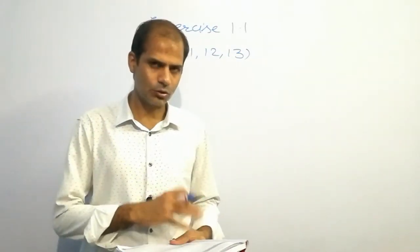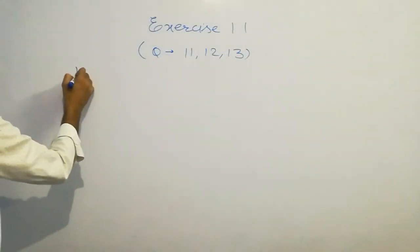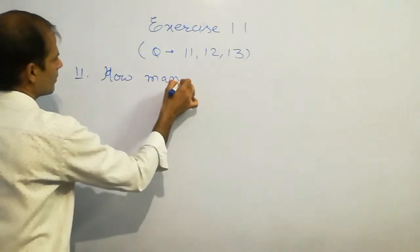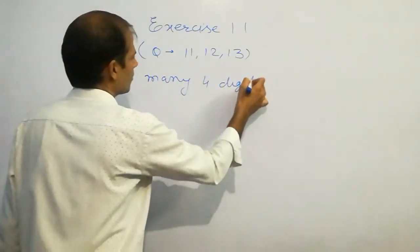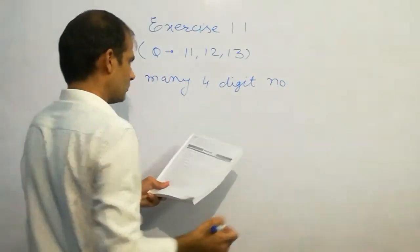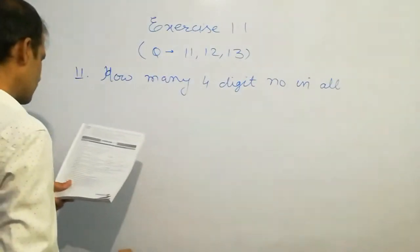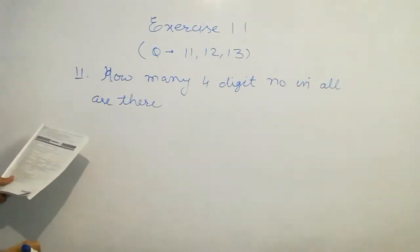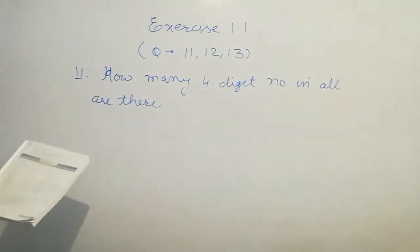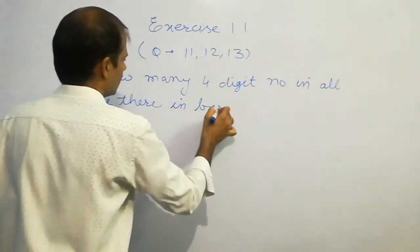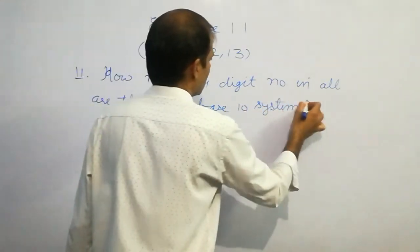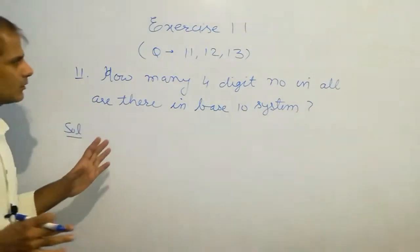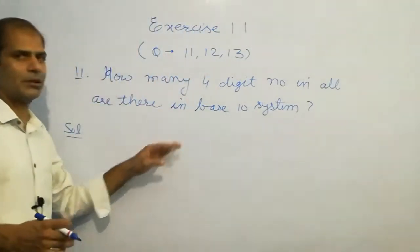Question number 11 is: how many four-digit numbers in all are there in the base 10 system? So I write the question. As the question seems to be easier, but there is a proper technique to solve it.